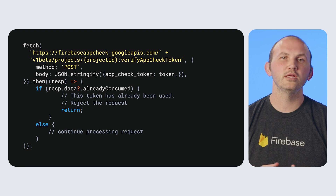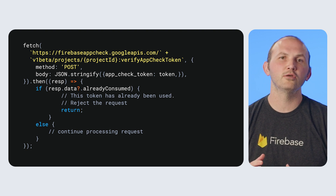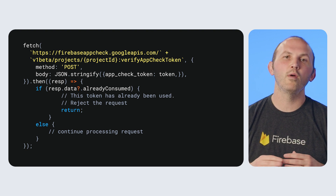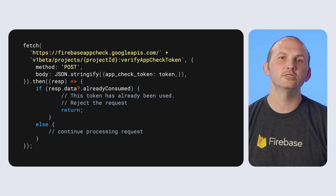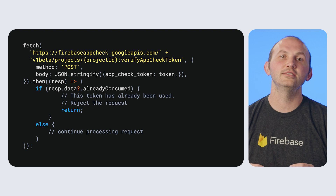Replay protection starts by doing what we did before with validating a token, but then it tracks if a token is used by sending the token to a Firebase endpoint, which then stores the token's JWT ID claim, or JTI, and its current consumption state on the server. You merely make a request to the URL endpoint, supplying your AppCheck token in the body of the request, and wait for a response, which you can then decode and check whether the already consumed field is present and set to true.